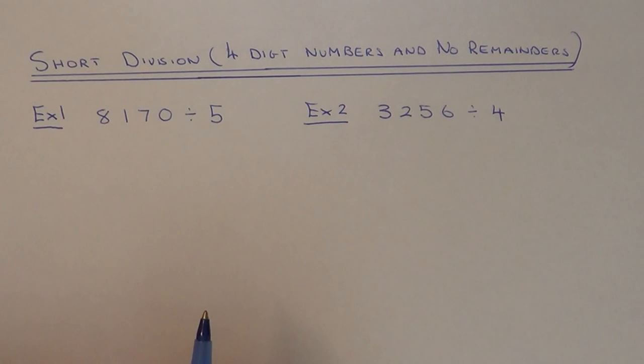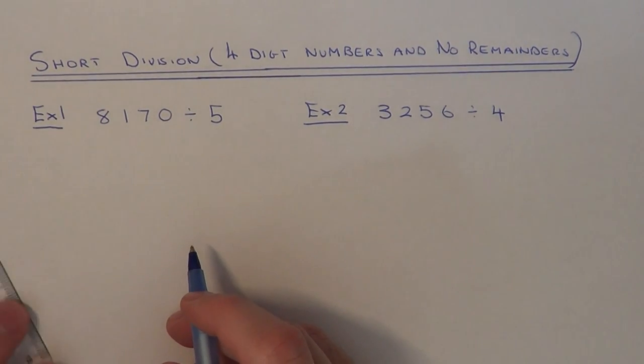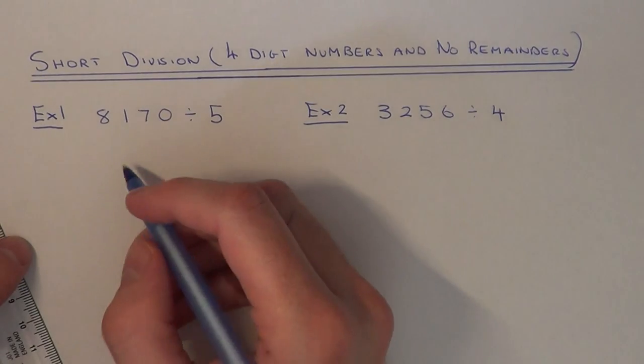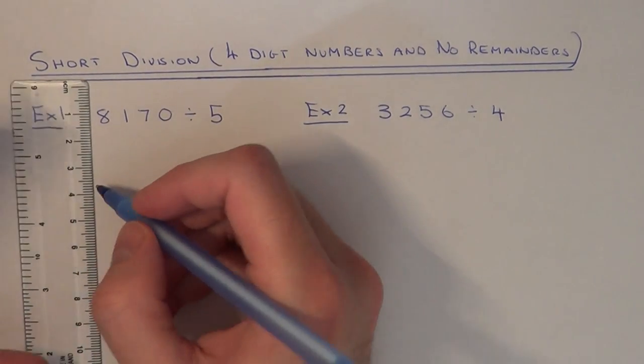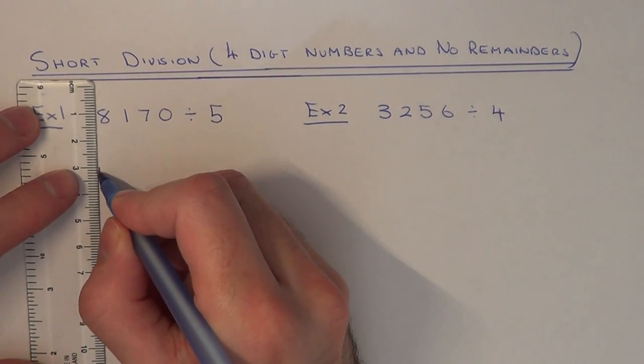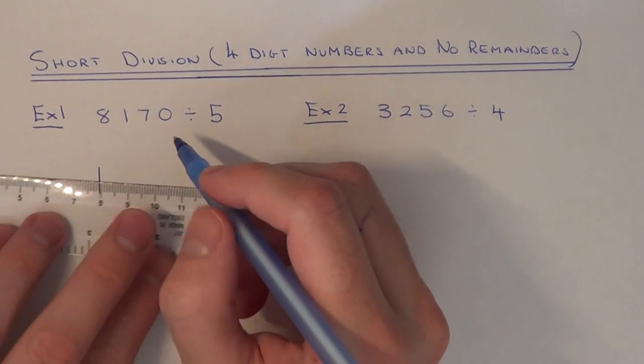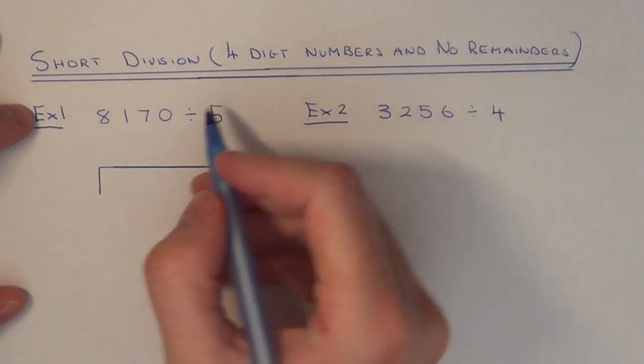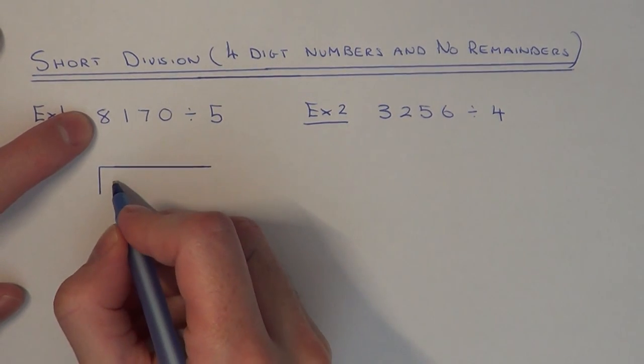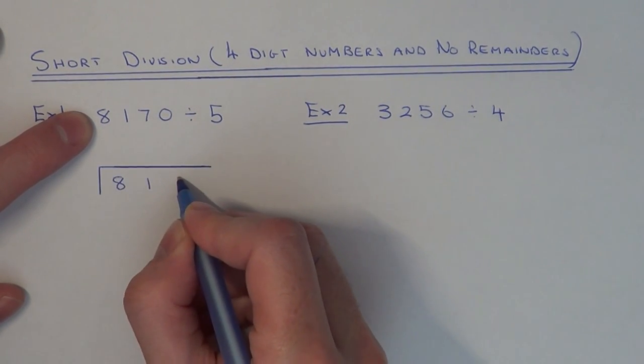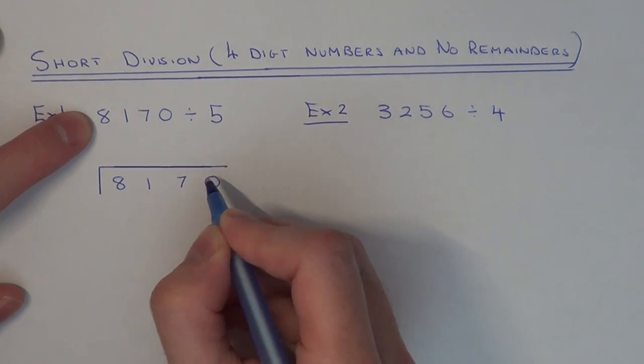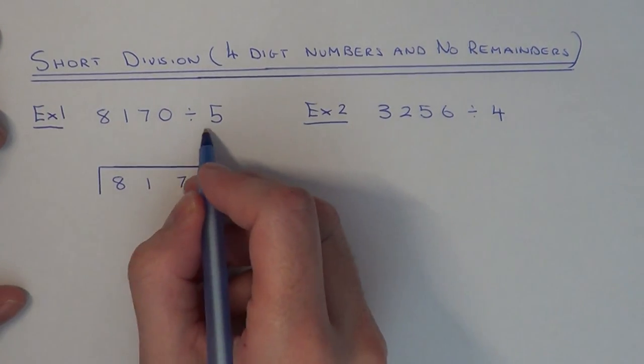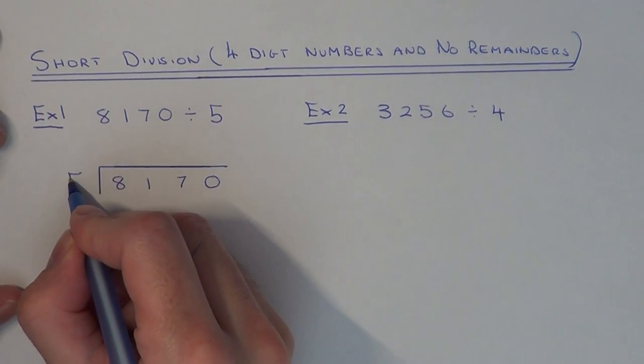Let's do example one: we've got 8170 divided by 5. First of all, we need to set the division out. We need to do a vertical line and a horizontal line, and the number that we're dividing needs to go underneath the horizontal line. So we've got 8170, and the number that we're dividing by, which is 5, will go at the start.